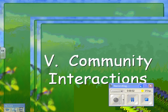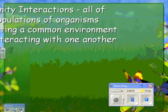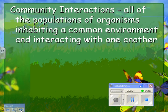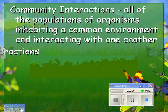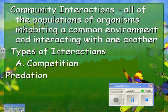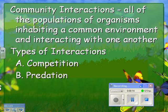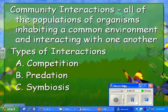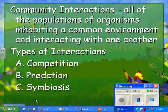Community interactions are all of the populations of organisms inhabiting a common environment and interacting with one another. The types of interactions are competition, predation, and symbiosis, and we're going to look at each one at a time.